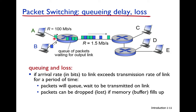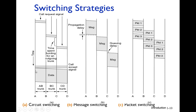When the buffer is full, arriving packets are lost — like a cup full of water where adding more causes overflow. If the buffer has space, packets will wait in the queue until earlier packets are transmitted. In packet switching there can be packet loss and queuing delay due to the buffer and queue.